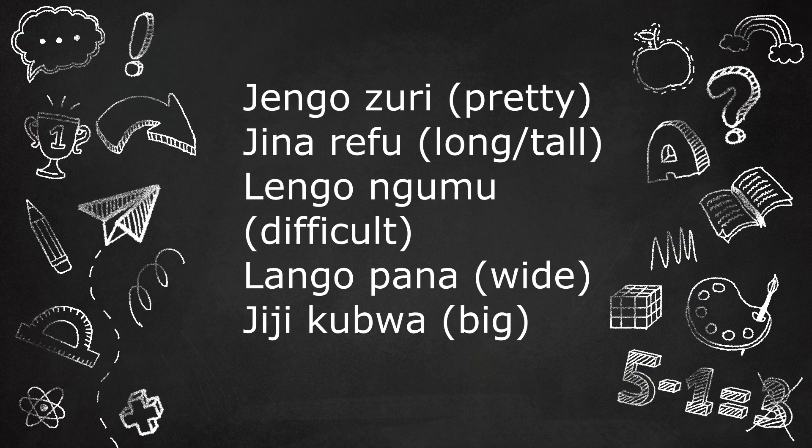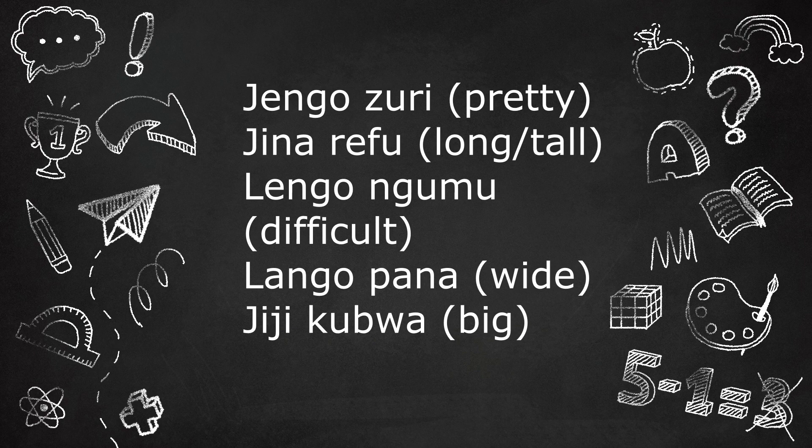We have Jengo Zuri, a pretty building. Jina Refu, a long name. Lengo Ngumu, a difficult goal. Lango Pana, a wide gate. And Jiji Kubwa. If you look at these adjectives, they do not carry a noun prefix.